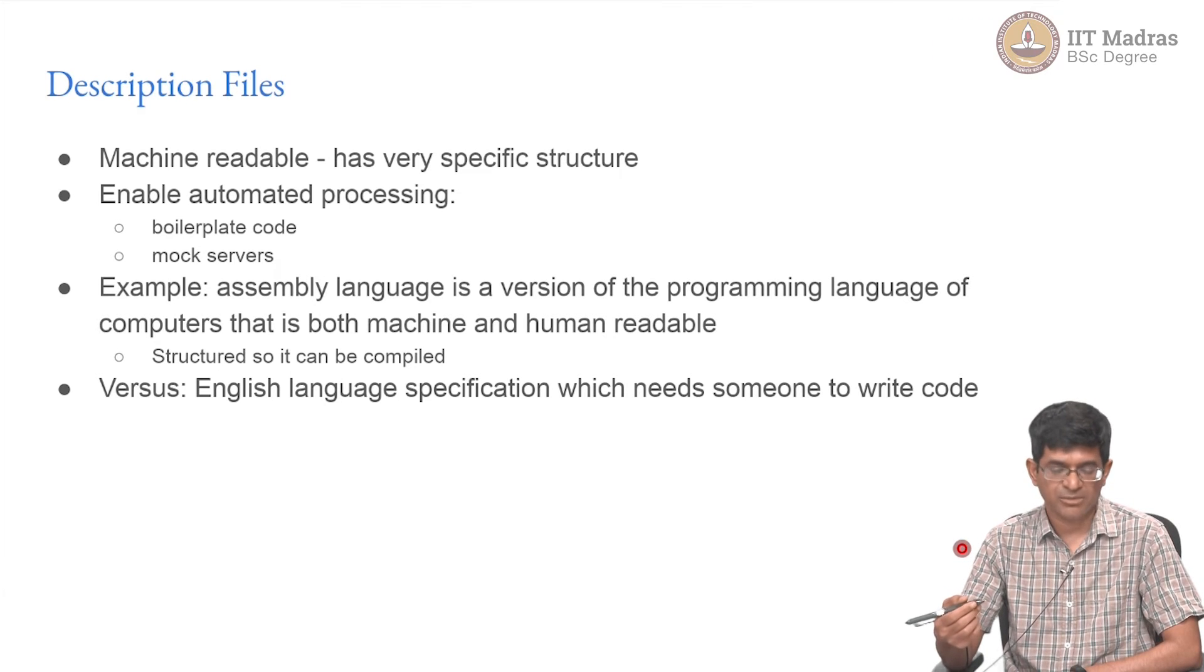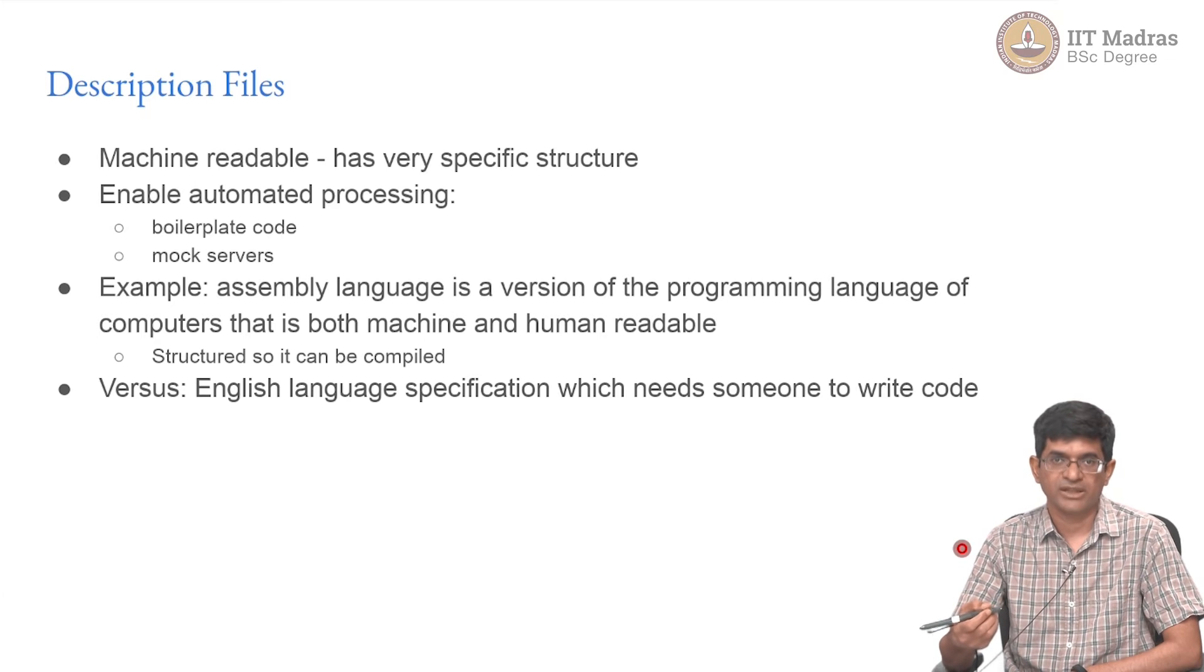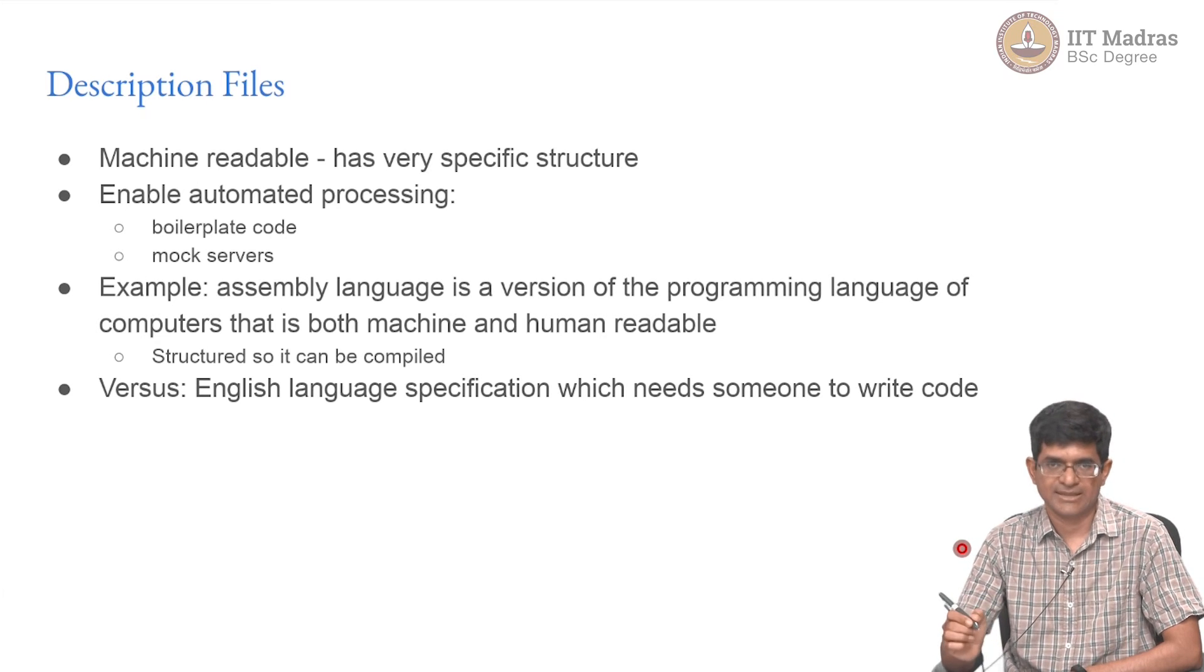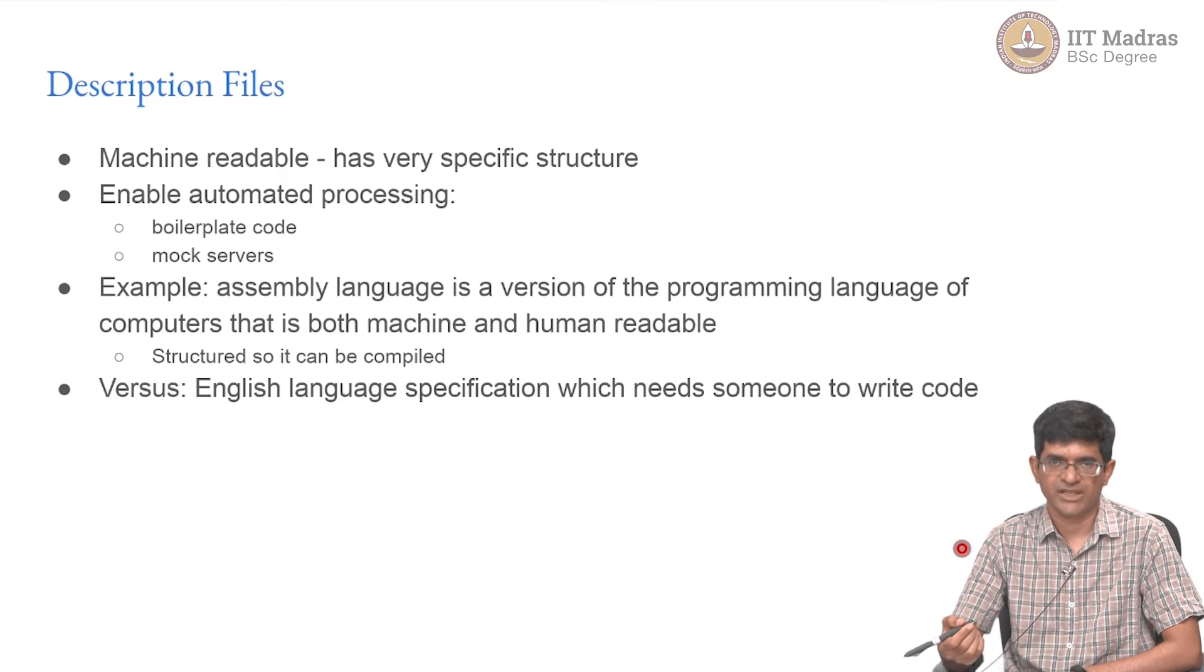An example of a description file or description language - we are used to these, we use them all the time. Any programming language, even something like assembly language, is a version of the underlying programming language of a processor. The actual programming language of the processor is those instructions which are binary code. Assembly language is basically a human-readable form, but it is not just that it is human readable, it is also machine readable because it follows a very specific syntax. Similarly, a C program is something that a human can read and understand, but is also machine readable. What we are talking about is not something that specific - it need not be a programming language as such, it just has to be structured enough that it can be read in by a machine and processed appropriately. In particular, just an English language specification is insufficient, because it still needs somebody to read that, understand it, and write code for it.